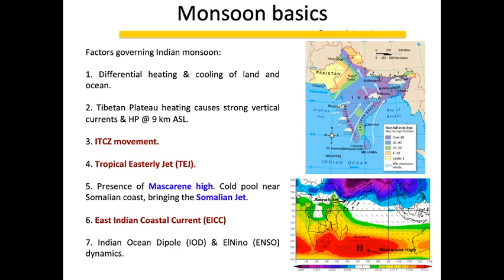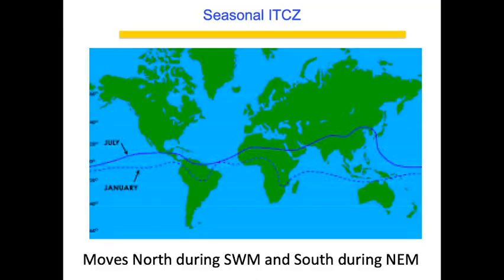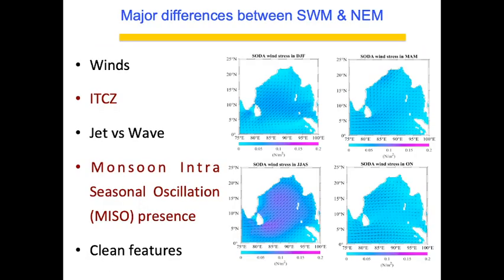We also have the IOD and El Niño, which are synoptic-scale systems governing the surface monsoon. Now we'll discuss whether these same factors apply to the Northeast monsoon or what changes. The first thing is the ITCZ: it moves north during Southwest monsoon, but after the Southwest monsoon, as the Tibetan plateau starts cooling in October, high pressure is created there and the ITCZ is pushed southward — so ITCZ moves south during the Northeast monsoon season.